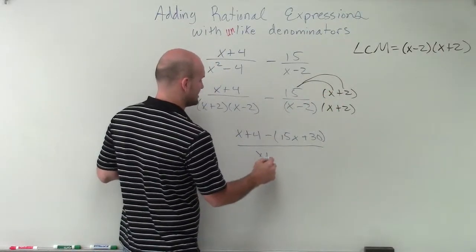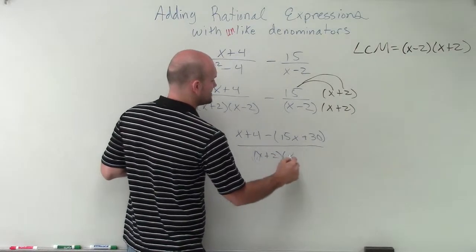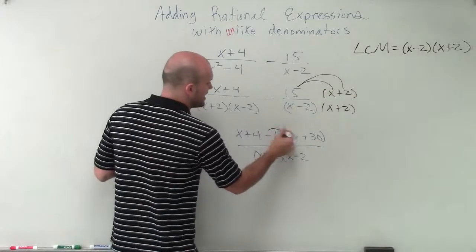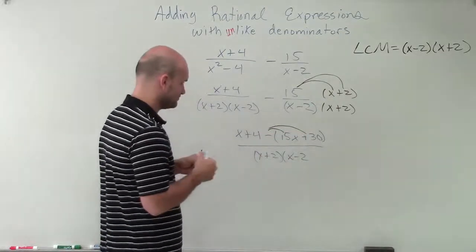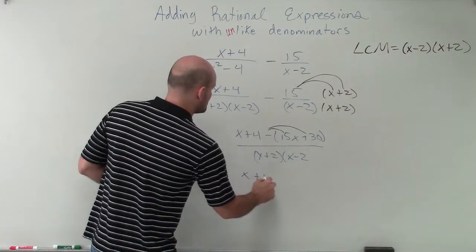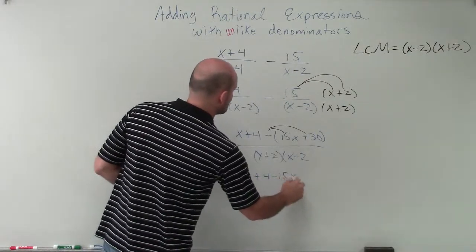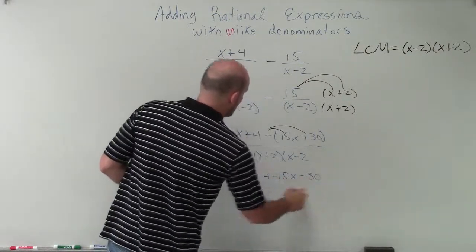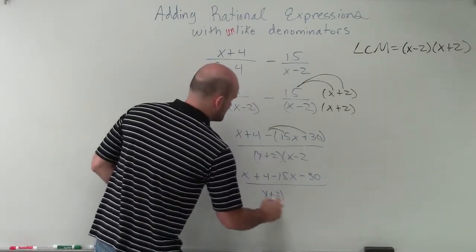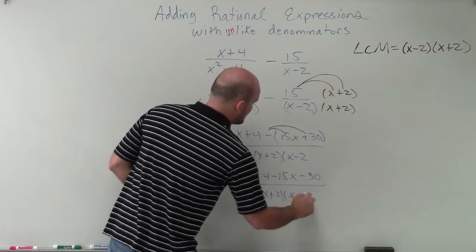So therefore now my LCM is x plus 2 times x minus 2. Now I can apply distributive property again with my negative sign. So therefore I'll have x plus 4 minus 15x minus 30, all over x plus 2 times x minus 2.